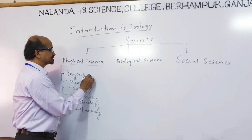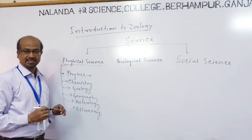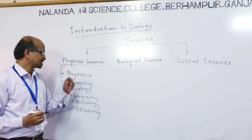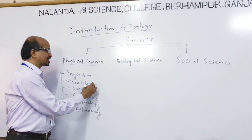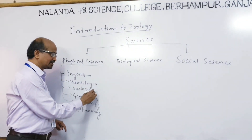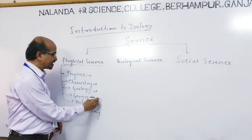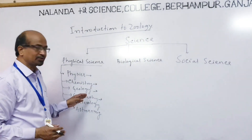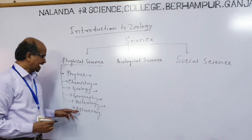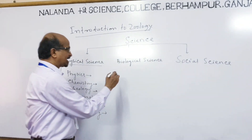In Physics, it is related to physical quantities like heat, temperature, light, atoms, and atomic structures. In Chemistry, you know the chemical reactions and structures. In Geology, you read all the Earth Science and the constituents of the Earth. In Geography, you read the physical structure of the Earth. In Meteorology, you read all the environmental science. In Astronomy, you know about planets, galaxies, stars, and all these things.